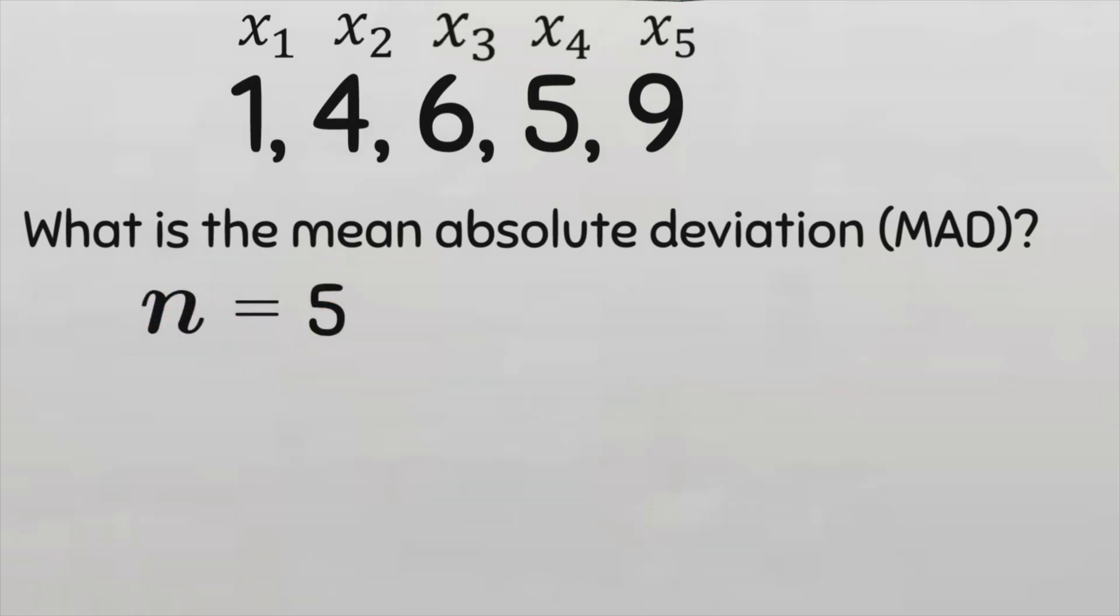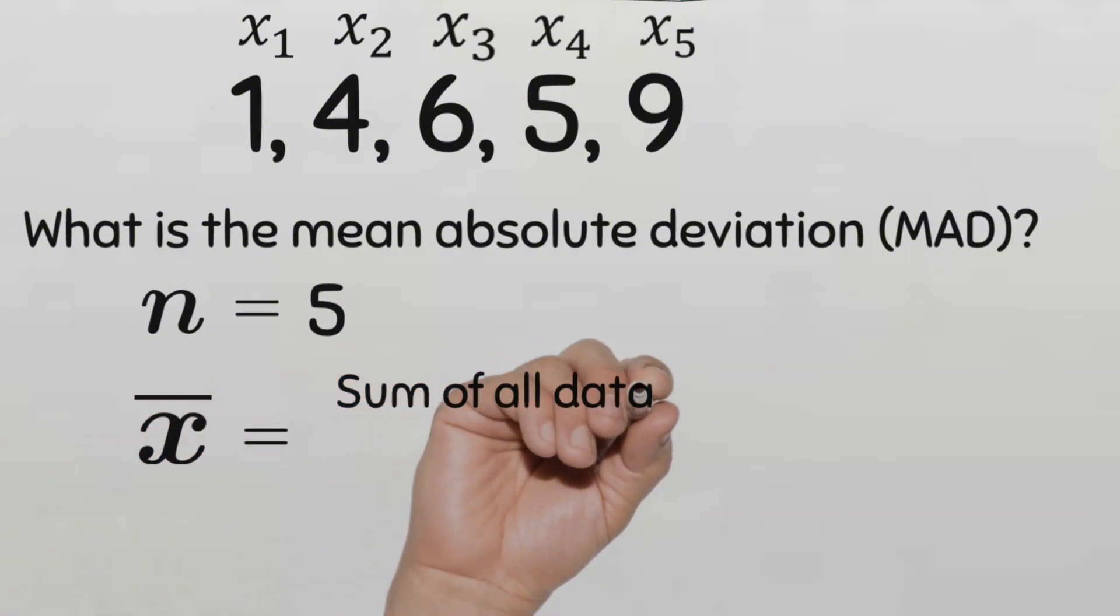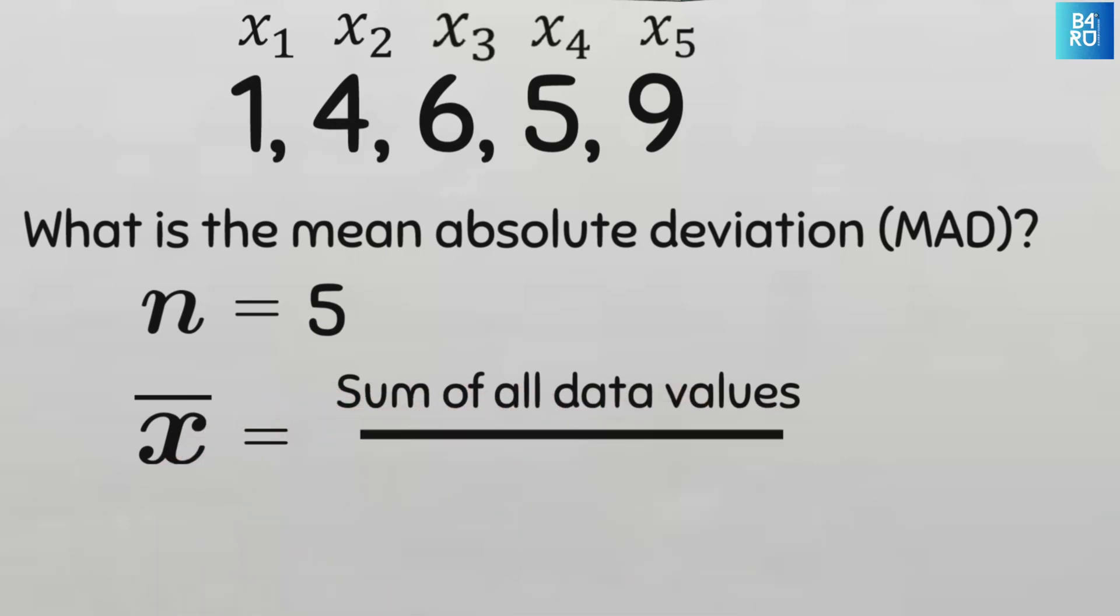Next, we need to find the mean of this data, or x bar. To find the mean, we will add all the data values, that is from x1 to x5. We'll add all these values together, and divide the sum by the number of data values, n.